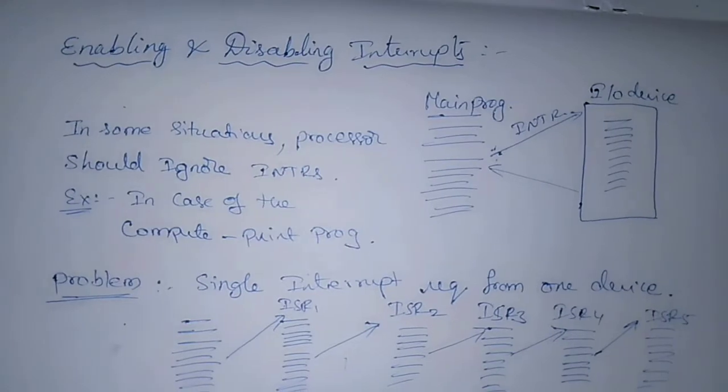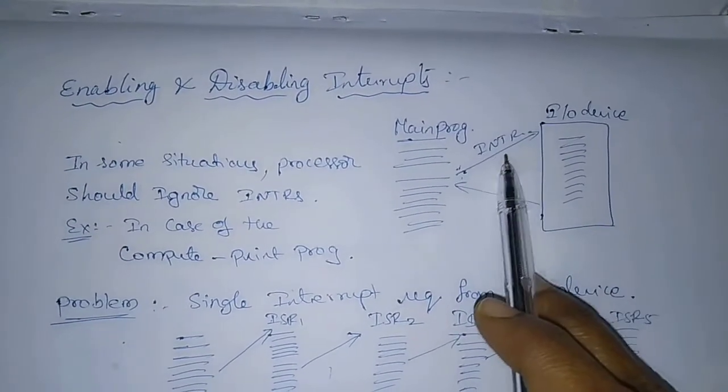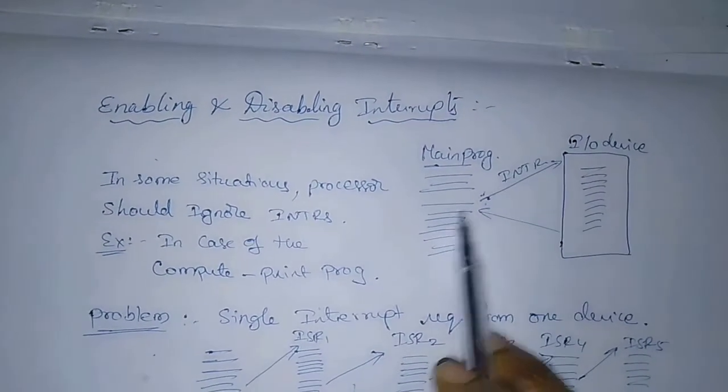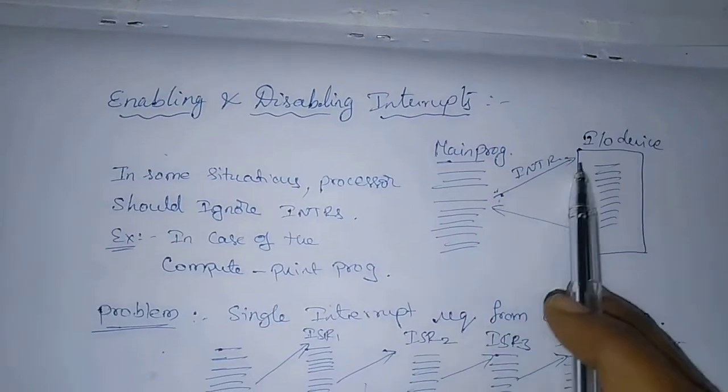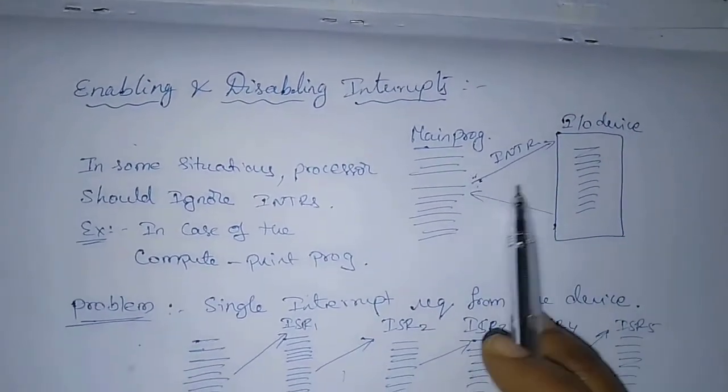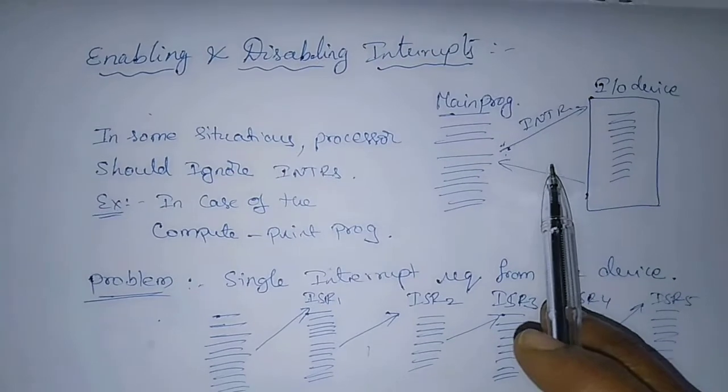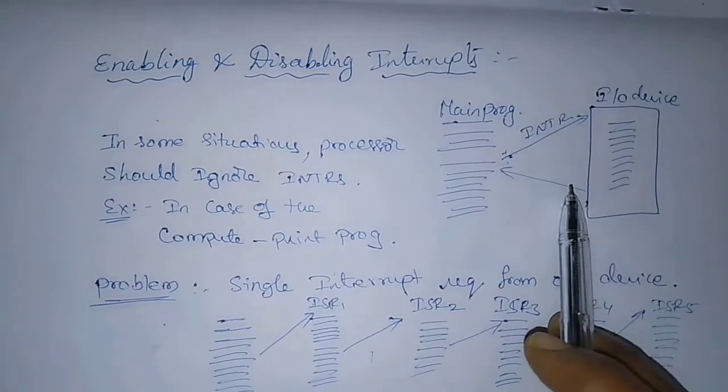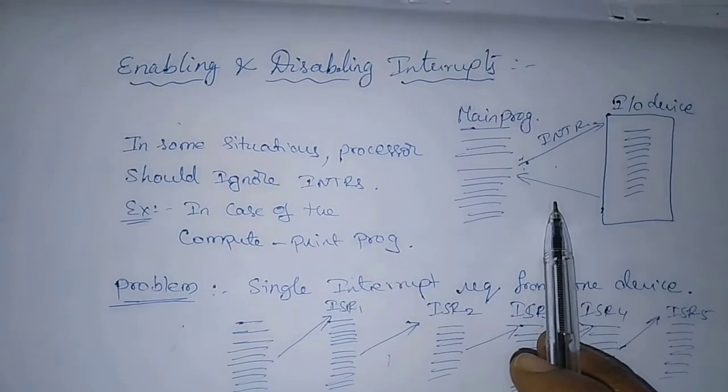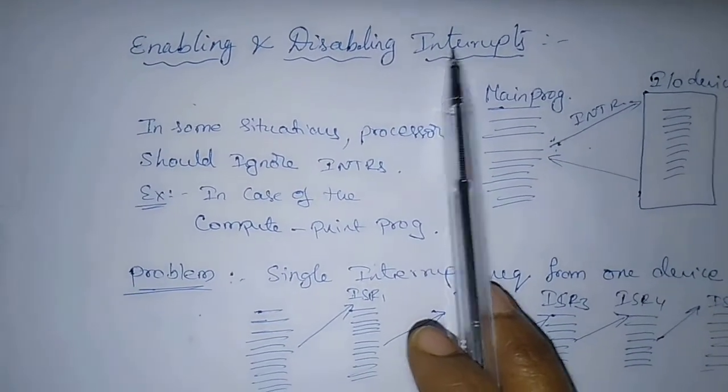In this video, let us concentrate on enabling and disabling interrupts. The arrival of an interrupt request from an external device causes the processor to stop the execution of one program and start the execution of another program. Interrupts can arrive at any time and may alter the sequence of events. Hence, the interruption of program execution must be carefully controlled. A fundamental facility found in all computers is the ability to enable and disable such interruptions as desired.